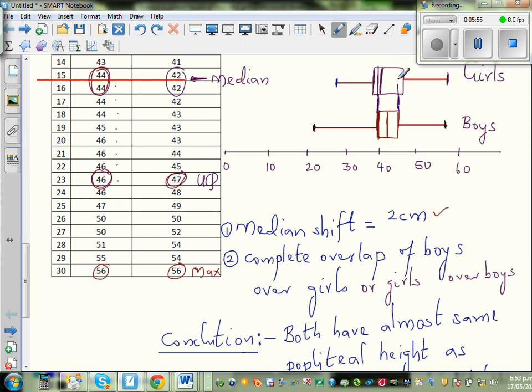I hope you understand what I mean. So this much is not exactly 50% for girls. It's less than 50%. So the middle 50% of boys completely overlaps the less than 50% of girls.